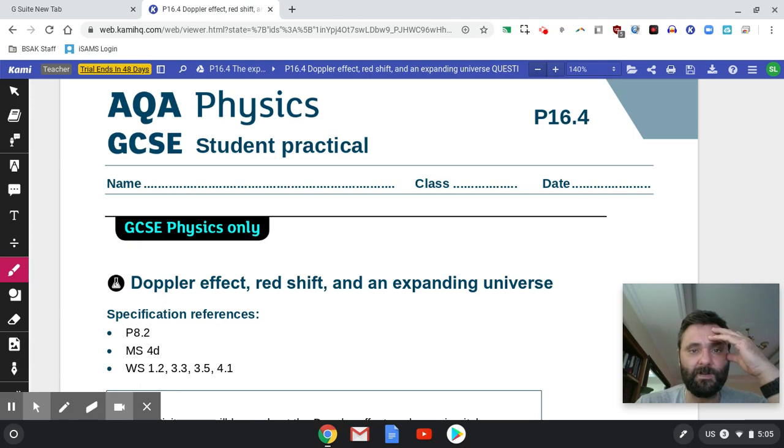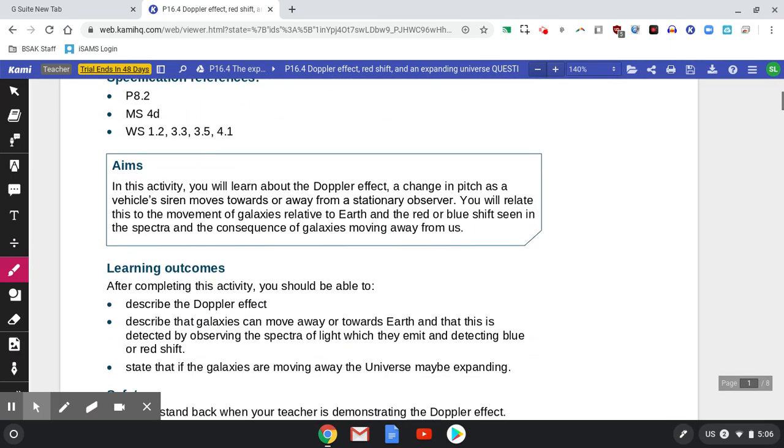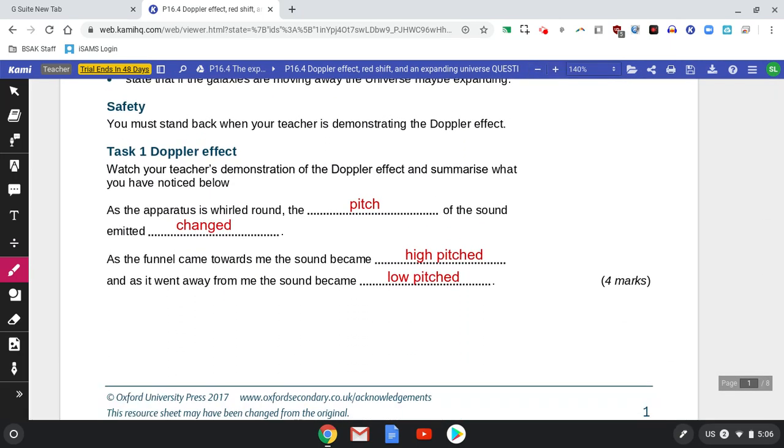Right, let's go through the answers to this worksheet which I set for last lesson, which is about Hubble's law and how the redshift of all the galaxies can be measured to come up with the lovely straight line graph seen in this worksheet. Most of this is pretty straightforward, it's all pretty much missing words.